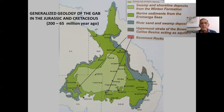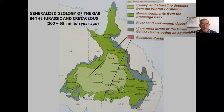You can see in general terms the fringes of the Great Australian Basin, and particularly the Eromanga Basin, with swamp and shoreline deposits — particularly Winton Formation — in the central portion of the basin. Marine sediments from the Eromanga seas outcrop beyond these peripherally, with occasional outcrops of basement rocks, particularly in the east where the Bowen and Galilee Basins still act as aquifers beneath the Surat Basin. In the south, you do get Basement Rocks, getting down into South Australia around the Flinders Ranges region.